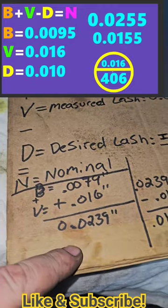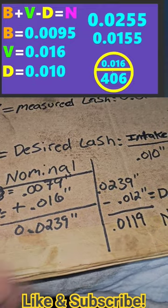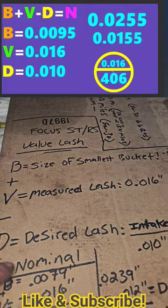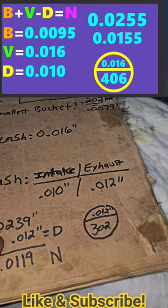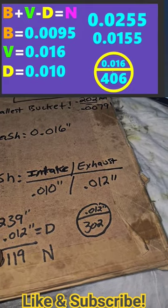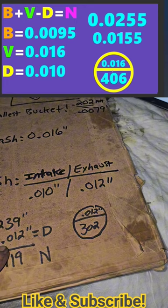So adding those together would be 0.039 thousandths. Then what you do is you minus your desired lash, minus your 0.0239 to 0.012.